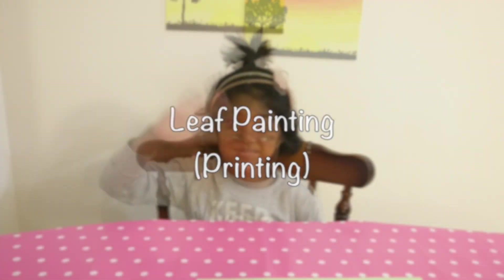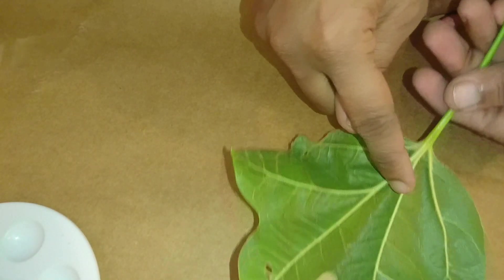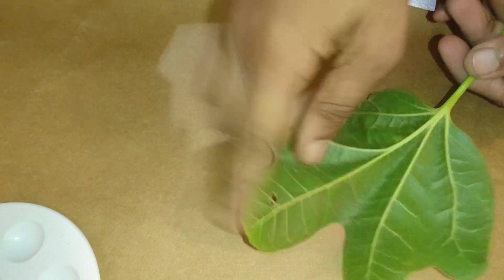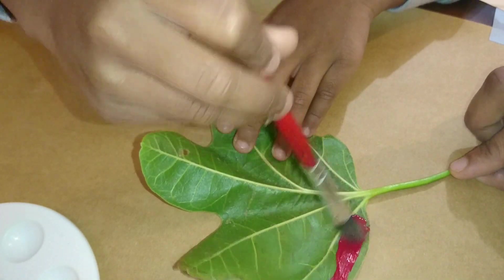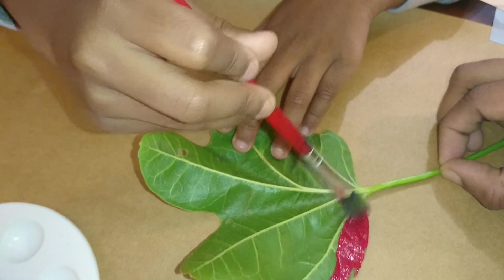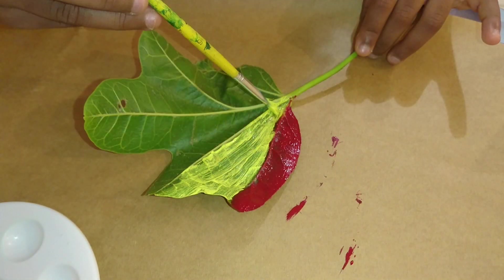Firstly, we are going to do leaf painting and printing. For that we have taken a big leaf. Haya is painting on the backside of the leaf using contrasting colors. Fresh leaves will work better. Dried autumn leaves are too brittle and they will break.